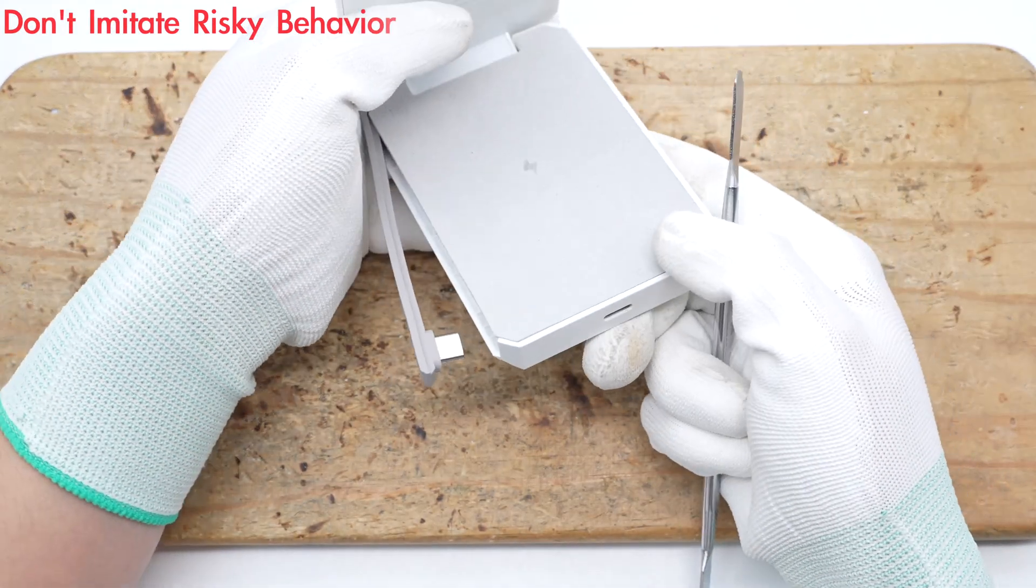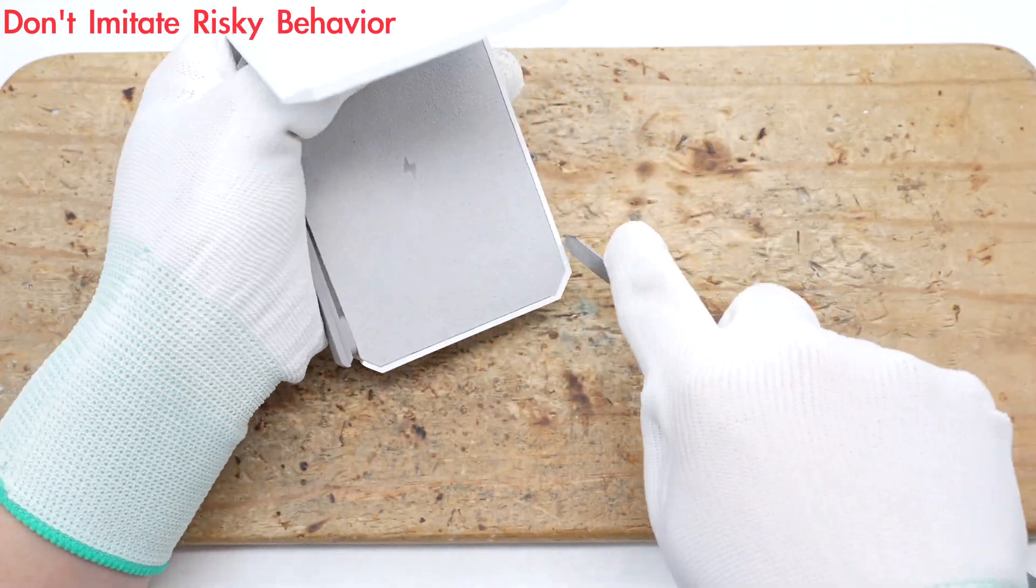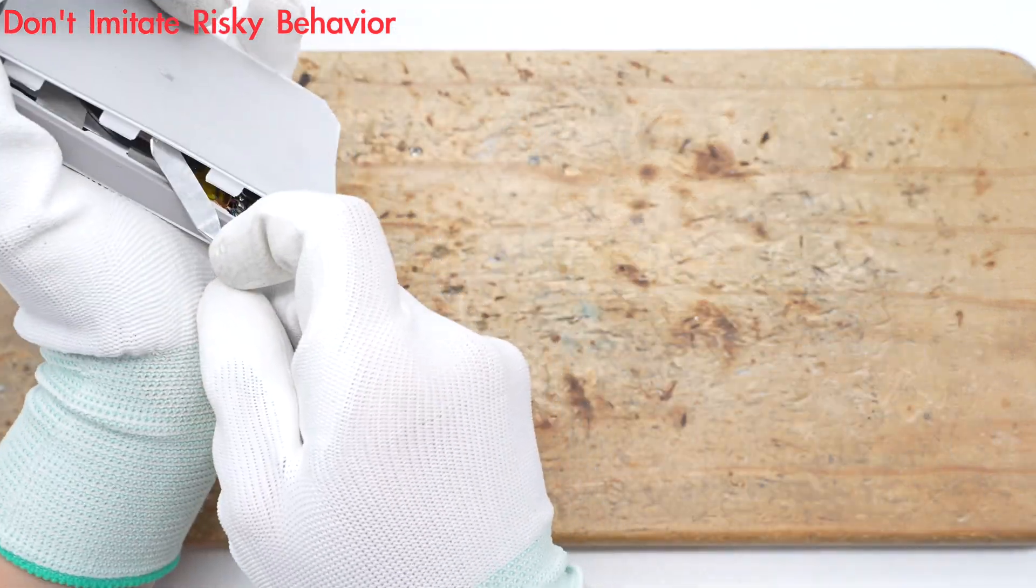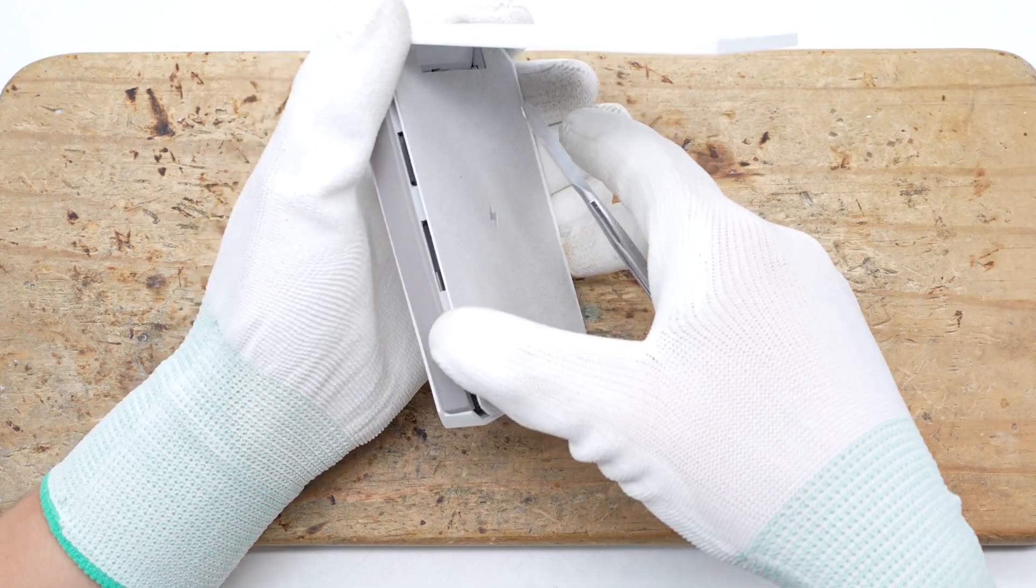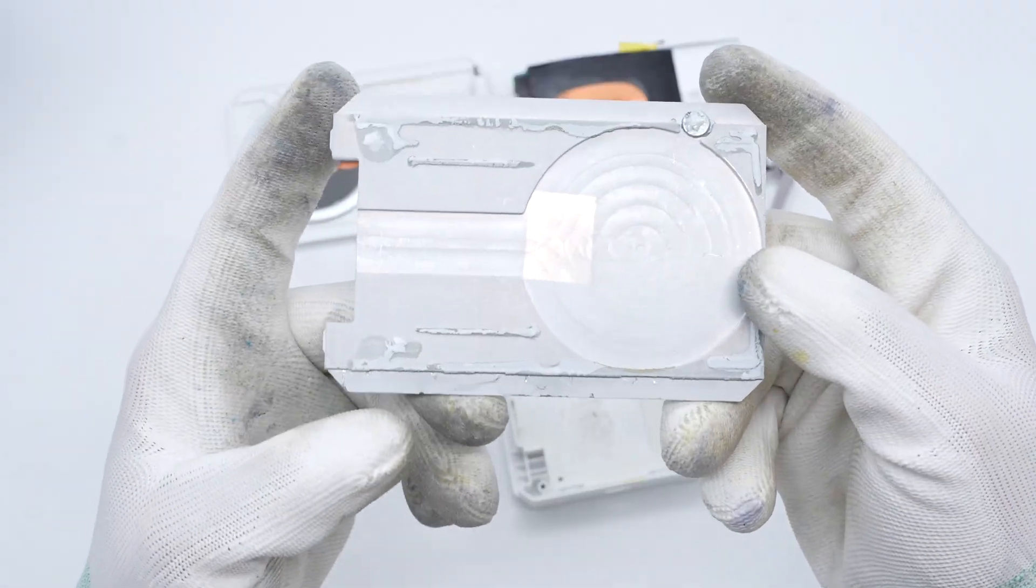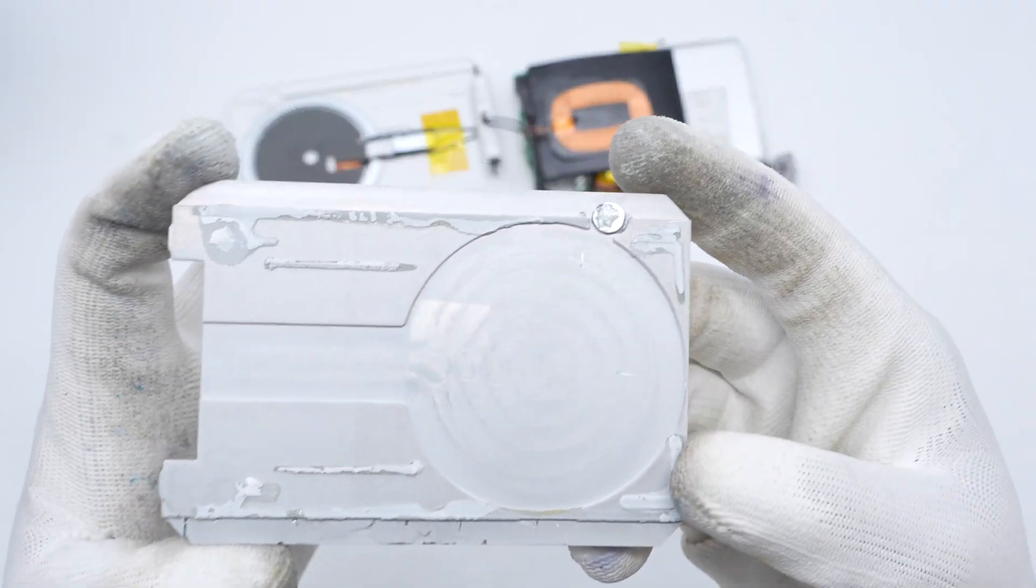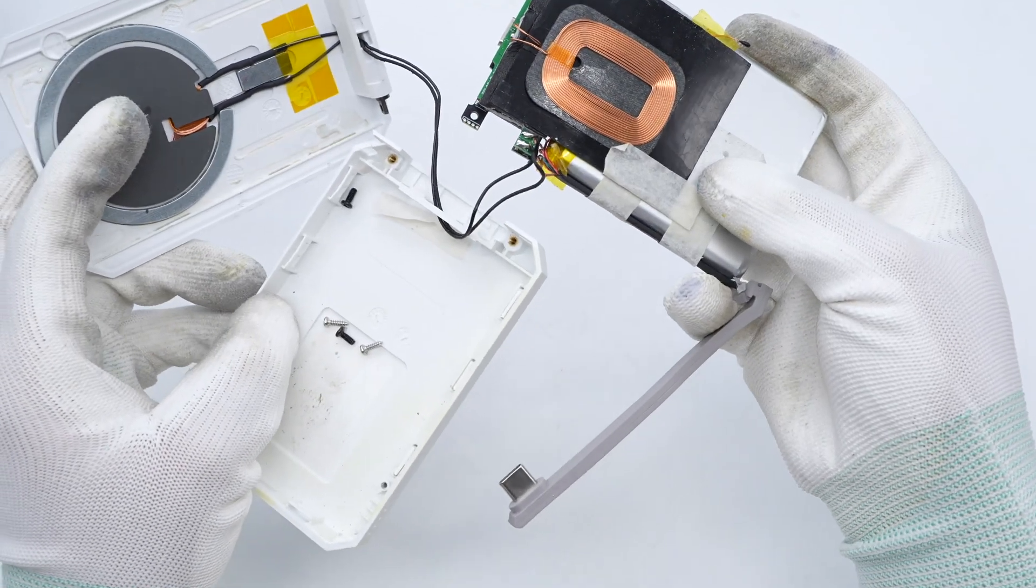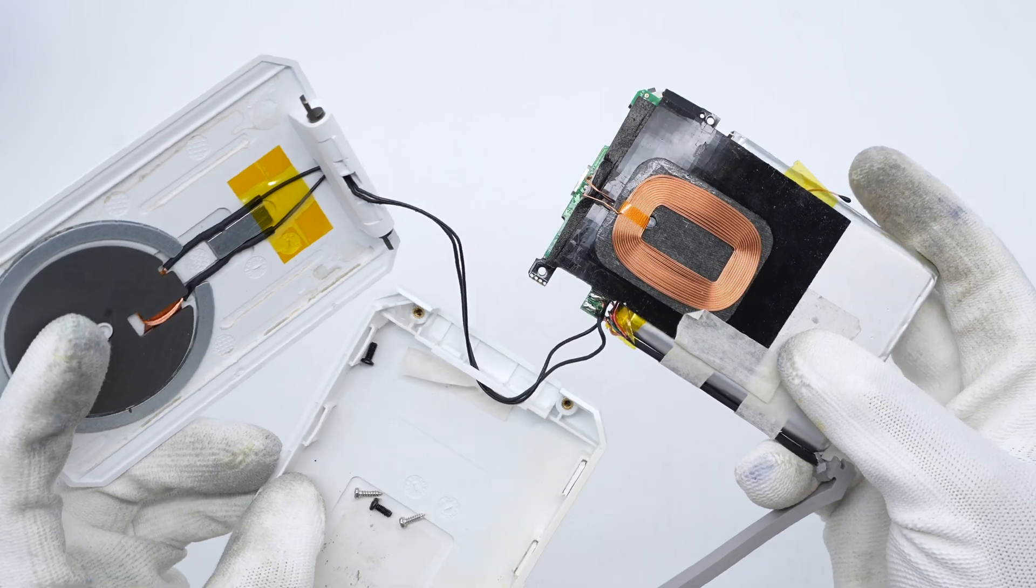Next, let's take it apart to see its internal components and structure. First, pry off the secondary wireless charging panel along the gap. Glue is applied to multiple places inside the cover. Magnets are used to attract the wireless charging coil. The coil is connected to the PCBA module through wires.